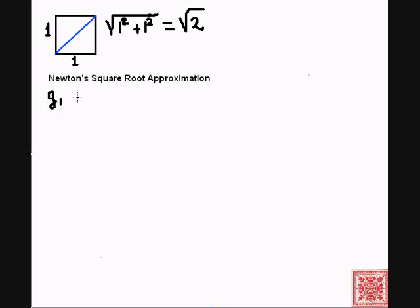The essence of the method is that we have a sequence of better and better guesses. Guess number 1, guess number 2, g1, g2, and then guess number 3. Let's say we keep on guessing and guessing, and then we get a guess number i, g sub i.